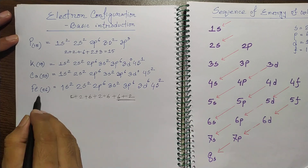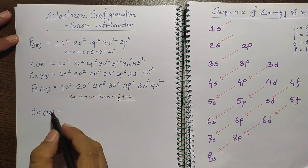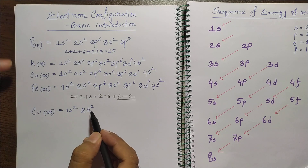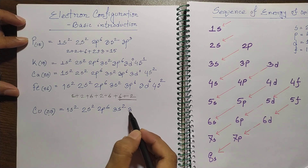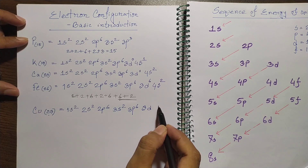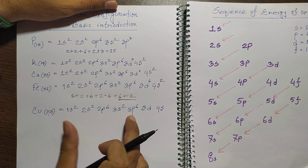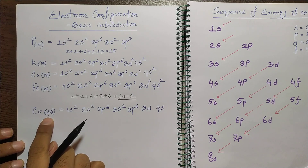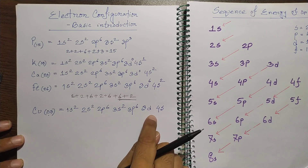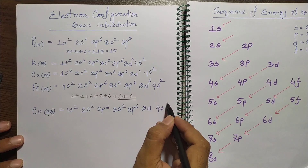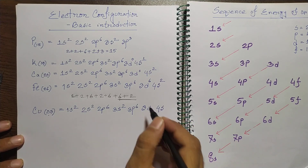Now think about copper, atomic number 29. The configuration starts: 1s2, 2s2, 2p6, 3s2, 3p6, then 3d and 4s. There are 18 electrons through 3p6, so we have 11 more electrons to place in d and s orbitals. Copper has a special electron configuration — if we put 4s2, that would leave only 3d9, which is not a stable configuration.